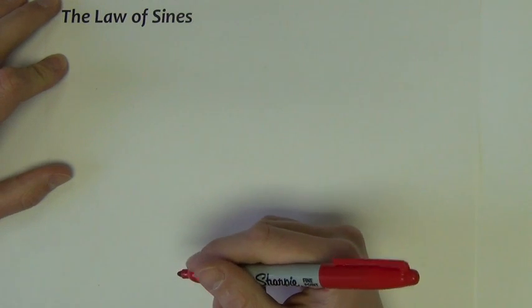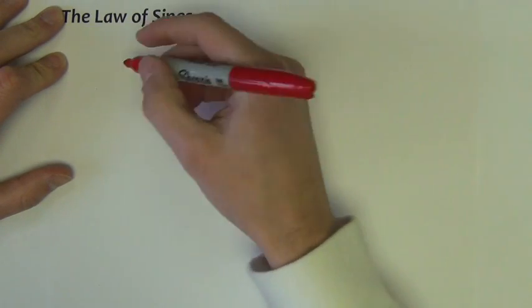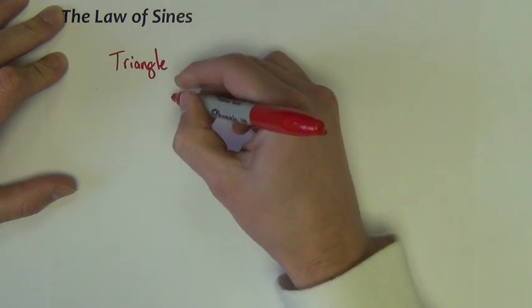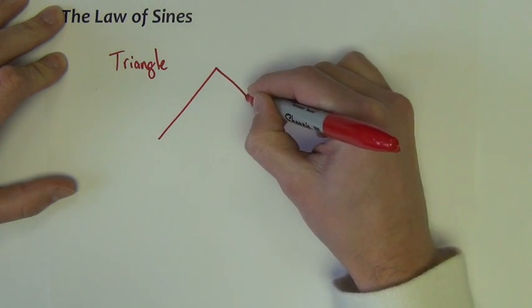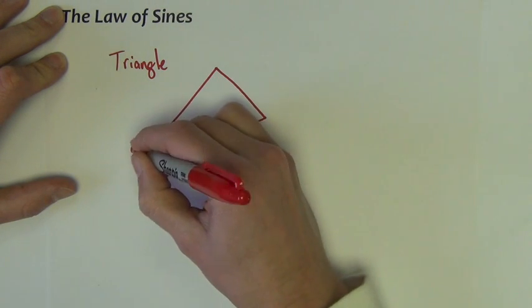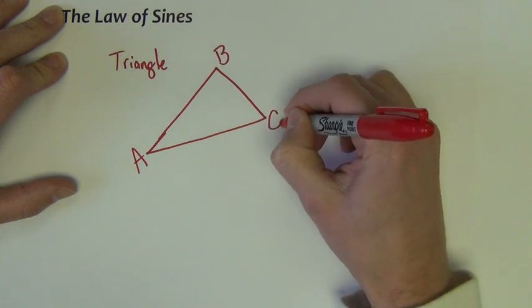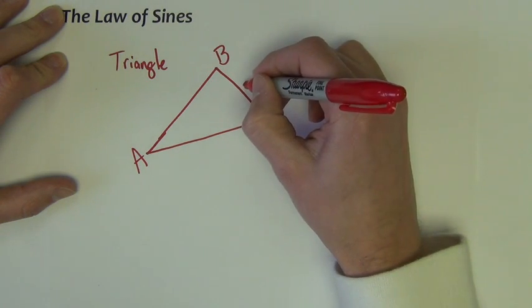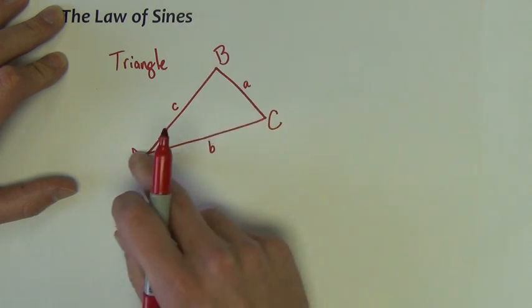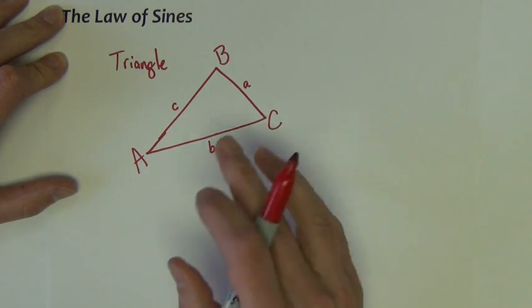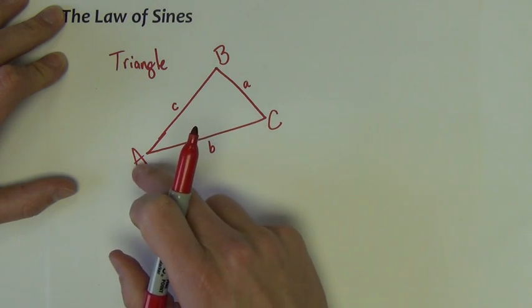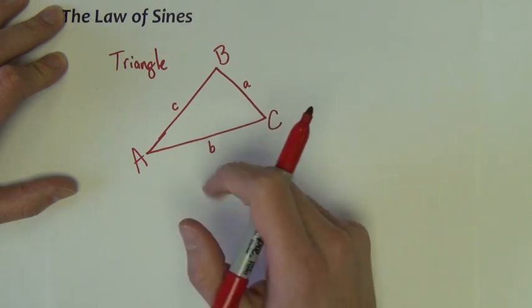So, law of sines, what is it? If we have a triangle and we label the angles A, B, and C, the sides then are lowercase letters a, b, and c across from their respective sides. So that's no different than how we kind of set up a right triangle as far as labeling angles with capital letters, sides with lowercase letters.